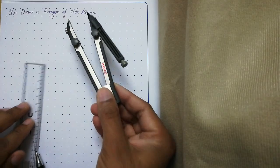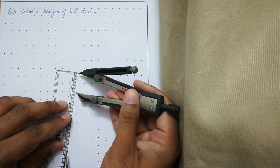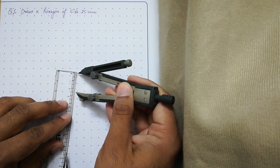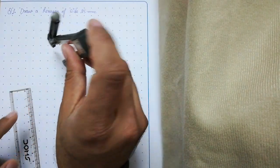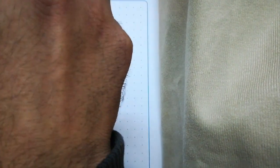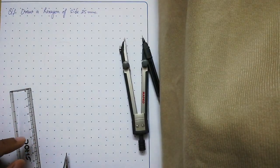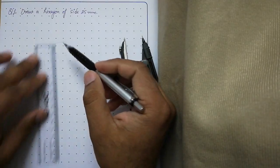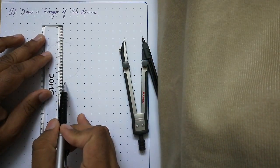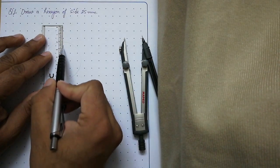It is 25 millimeters, so open your compass equal to 25 millimeters. After that, put your compass on a dot and draw a thin circle. After this, draw the vertical diameter of the circle with the help of a scale.